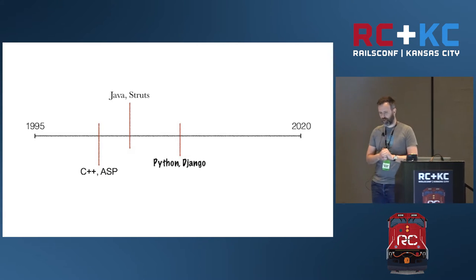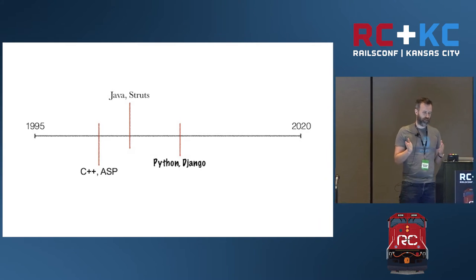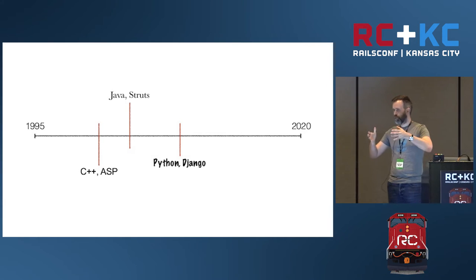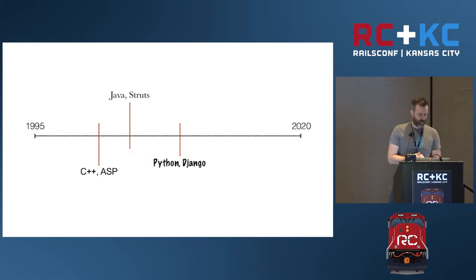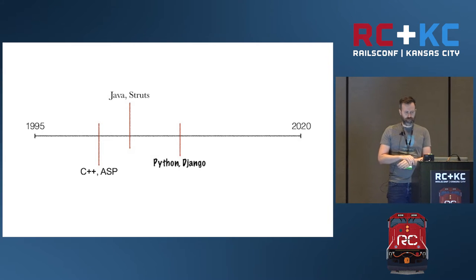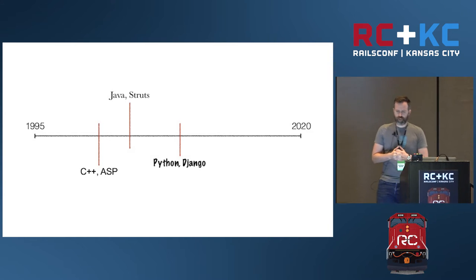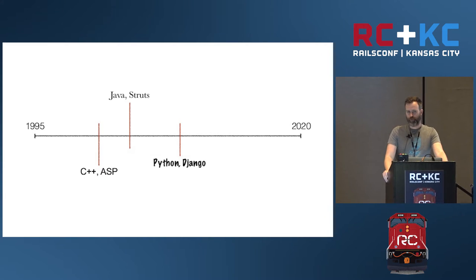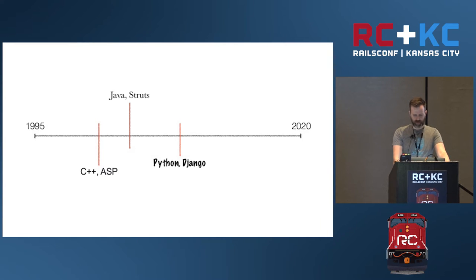Around 2009, we had some teams — specifically a group called Cerner Health focused on consumer-oriented stuff — that started experimenting with Python and Django. In 2009, this was a completely valid choice. They were a smaller group, kind of off on their own doing their own thing, while there was still lots of Java development happening, lots of Struts, and all of that.